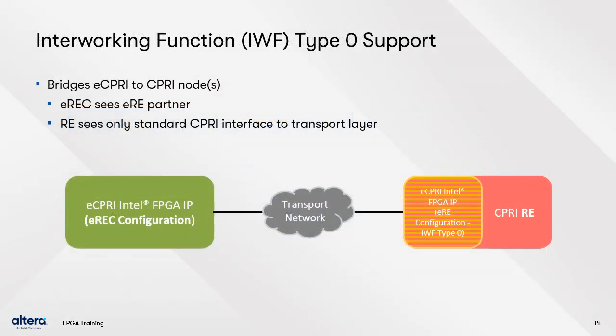The eC-PRE IP also has support for interworking function, or IWF Type 0. This allows the IP core to serve as a bridge between an eC-PRE network and a C-PRE node or nodes, converting eC-PRE message types 0, 2, 6, and 7 to C-PRE. The advantage is in bridging to older equipment that uses the C-PRE standard, eliminating the need for complete replacement. When IWF Type 0 support is enabled, bridge logic is inserted between the C-PRE node and the eC-PRE link, so that the eC-PRE link sees an eC-PRE connection when looking towards the node, but the C-PRE IP sees only a standard C-PRE interface.